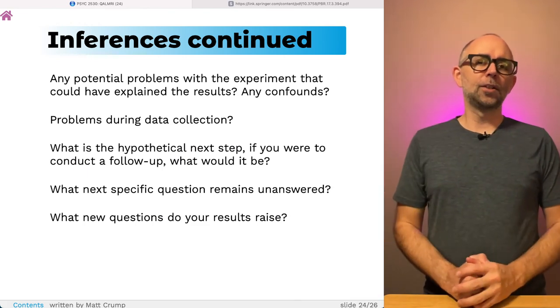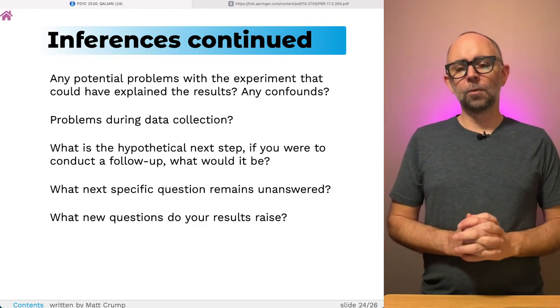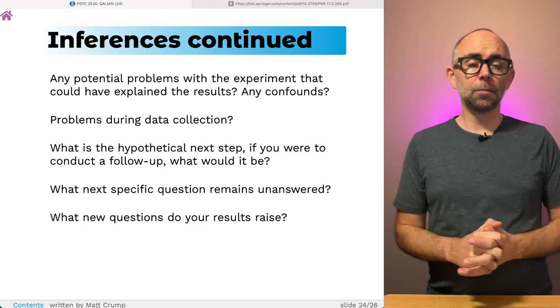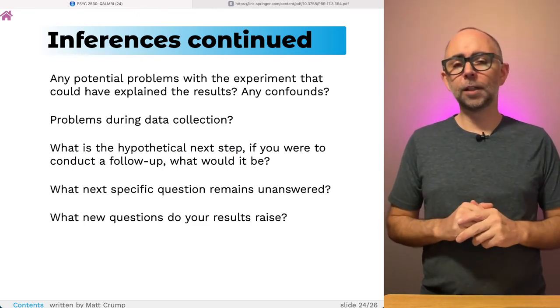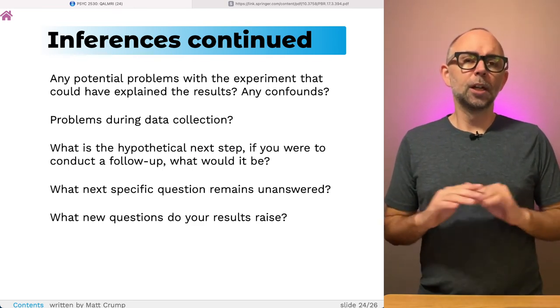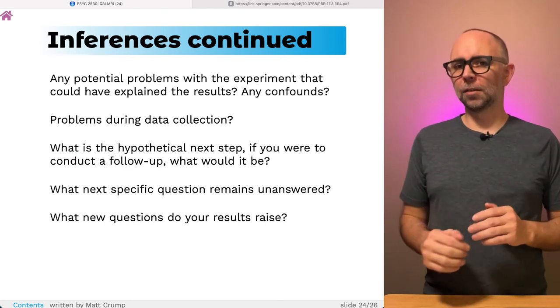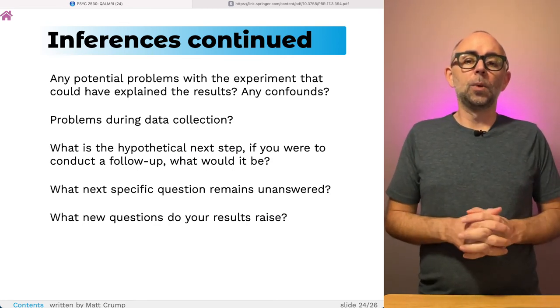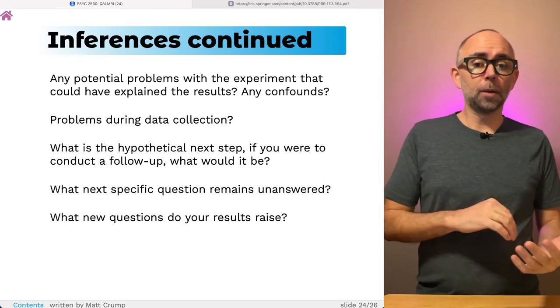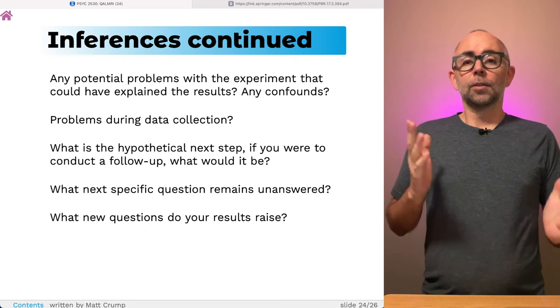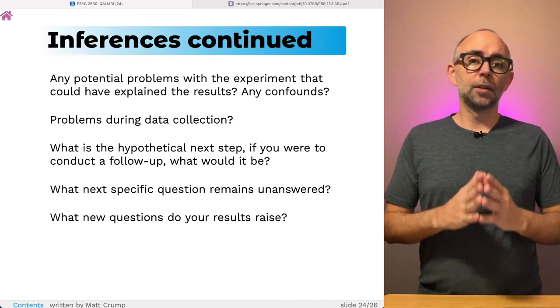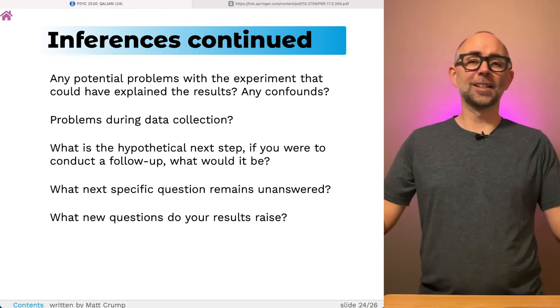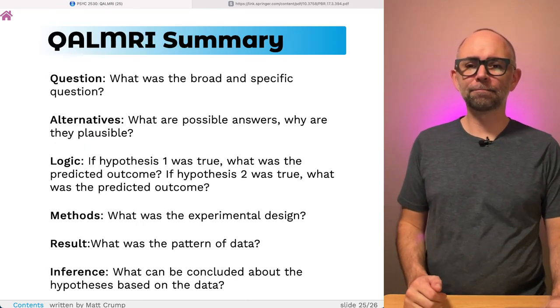There's many more things we can add on to the last section of inferences. We can consider potential problems with the experiment that could have explained the results. For example, maybe people typed a little bit more slowly, or made more errors, because those other weird keyboards didn't work quite as well as a regular keyboard. We could examine potential problems during data collection. We can consider next steps or follow-up research ideas. There's lots of ways to continue with the research questions by moving on to other ones that address other parts of the bigger questions.